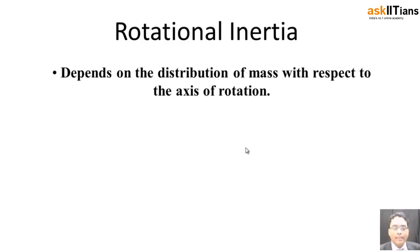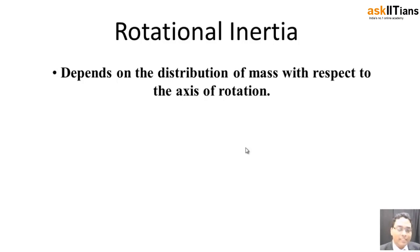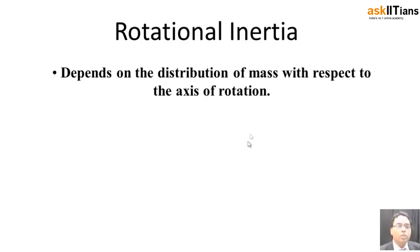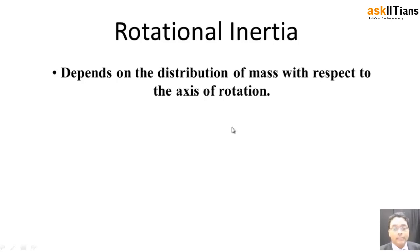Rotational inertia is nothing but an analog of mass — basically in rotation it's an analog of mass. Mass exists in the case of linear motion, whereas in the case of rotational motion it is replaced by the moment of inertia. Its role is taken over by the moment of inertia. So rotational inertia obviously is going to depend on the distribution of mass with respect to the axis of rotation.